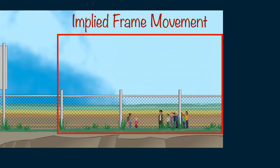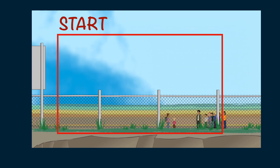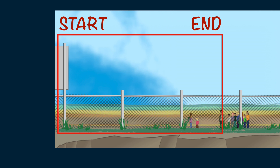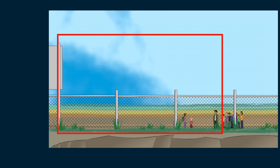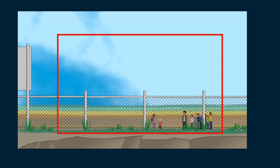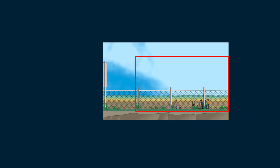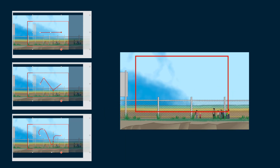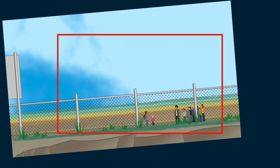To animate an implied frame movement, think about the starting point of the shot and the end point, and the speed of moving from the start to the end. Decide on the direction of the movement — do you want it to go left, right, up, down, in, or out? Adjust the path of the movement: it can be straight, angled, or curved. There can also be rotation in the movement.